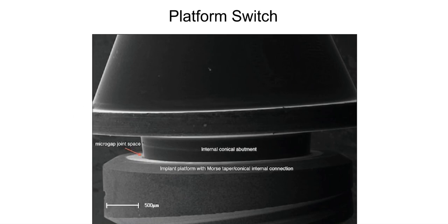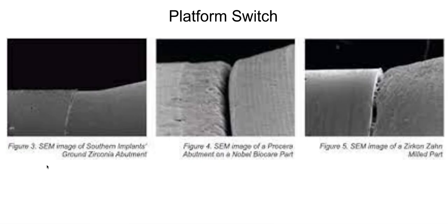Talking about bacteria — platform switching is a term we've all heard, but understanding it conceptually might be out of our reach. Before talking about platform switching, let's bring back the concept of the micro gap. The micro gap is essentially an interface between two prosthetic components that have enough space that bacteria can live there. That micro gap can be microns to nanometers. When you have a micro gap, you have potential bacteria accumulating, and the location of that micro gap in relation to biological surfaces is very important.